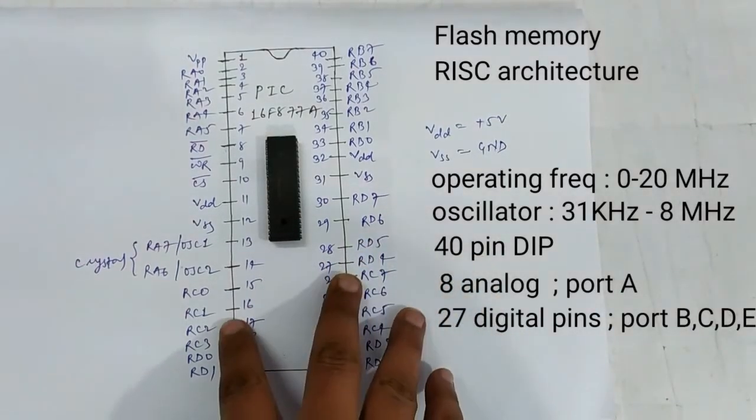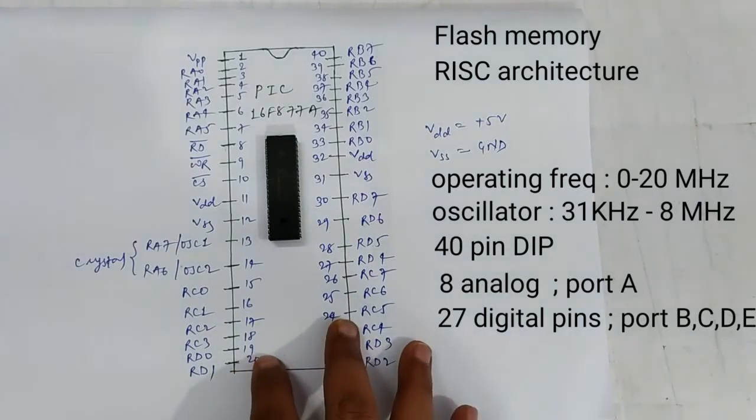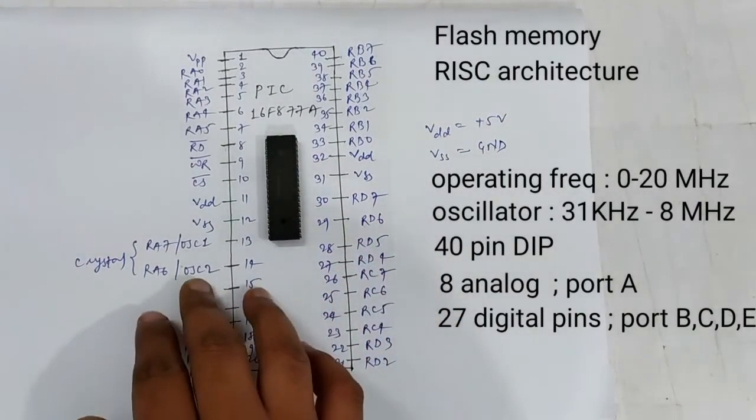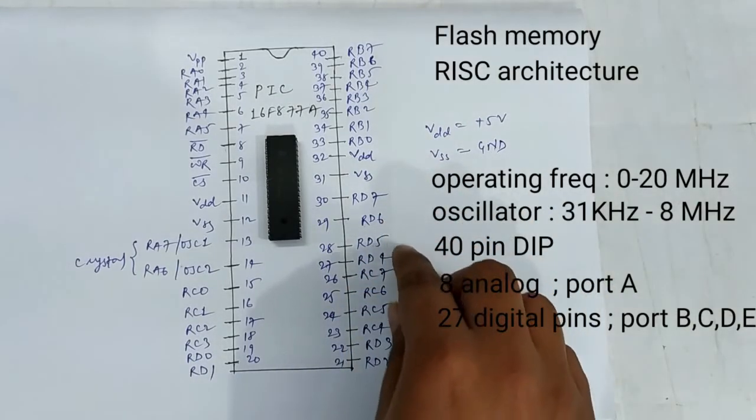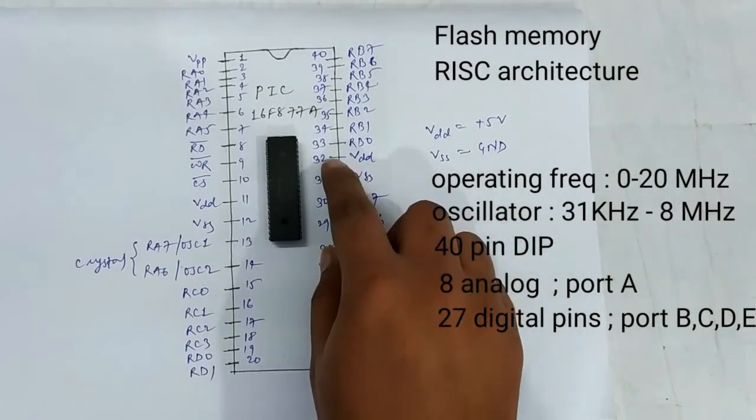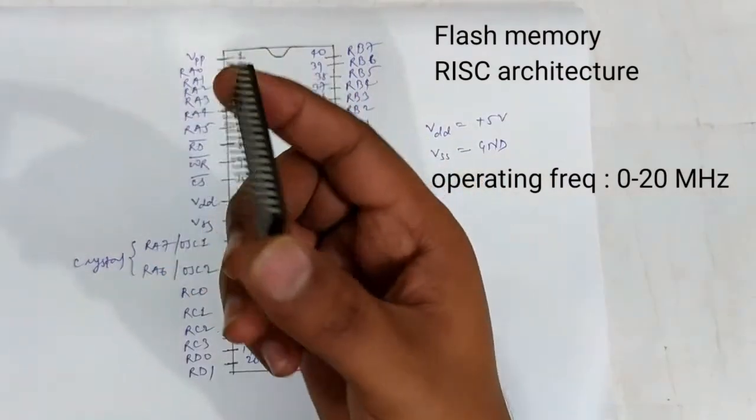The remaining 5 pins are used for other purposes. For example, there are 4 VDD and VSS pins as you can see here at pins 32, 31, 11, and 12. This PIC microcontroller will be programmed on MicroC or MicroC Pro.